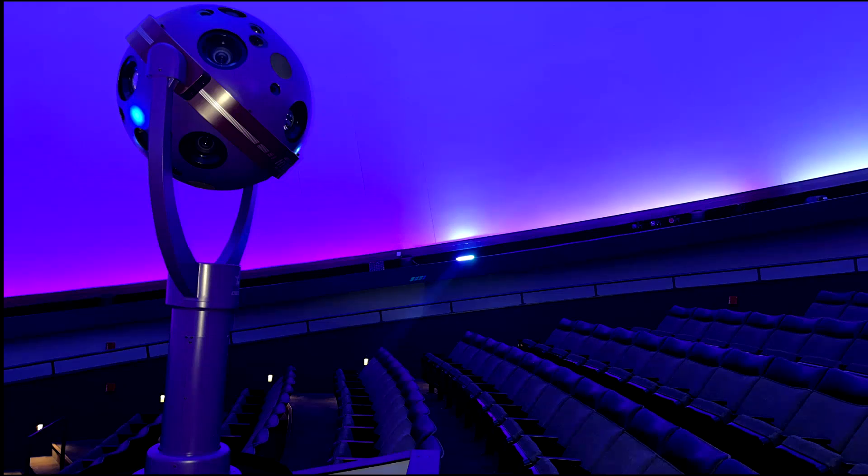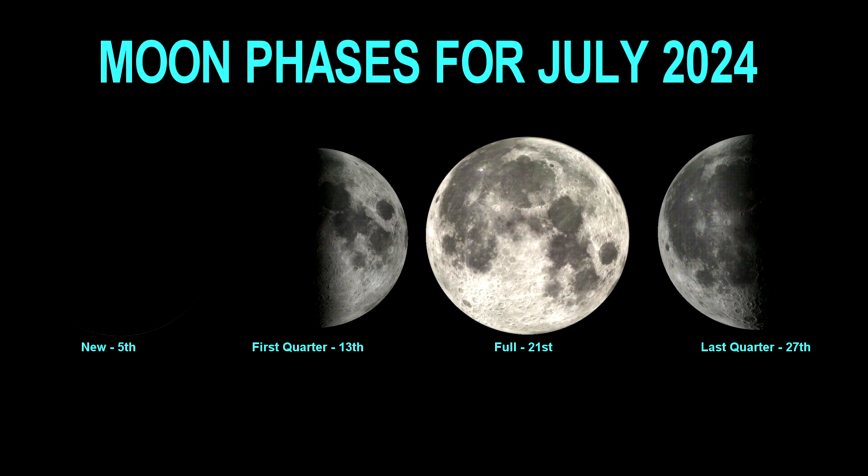As always, we'll start off with the moon phases this month. The moon will be new or invisible on July 5th, first quarter moon on the 13th, full moon on the 21st, and last quarter moon on the 27th of July.